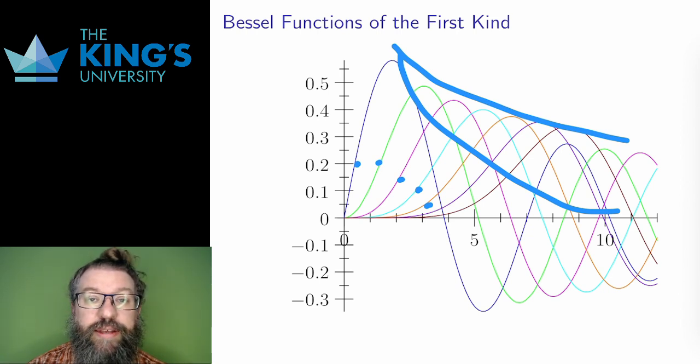I mentioned a drum head before, but another really nice example is dropping a small stone in a pool of water. The waves radiate outward in circles. The amplitude of those waves radiating outward, as depending on the radius, can be nicely modeled by a Bessel function. So the next time you see circles rippling in water, think of the Bessel functions.